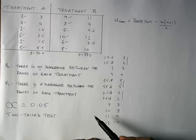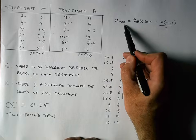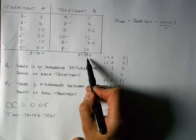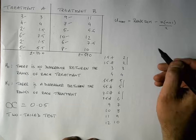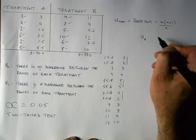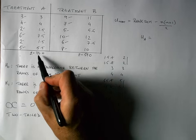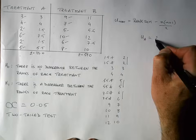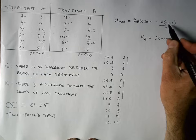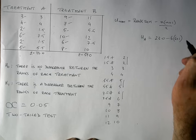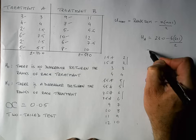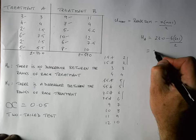Now I'm ready to calculate the U statistic, which the Mann-Whitney U test is based on. The U statistic equals the rank sum minus N times (N plus one) divided by two, where N is the number of values in each treatment. For treatment A: U equals 23.0 minus (6 times 7) divided by 2, which gives a value of 2.0.